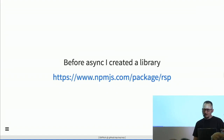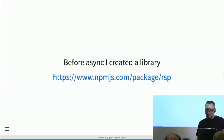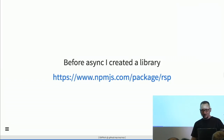Before async/await was around, I created a library on NPM. My GitHub and Stack Overflow handle is RSP from my initials. I was searching for names and the first was RSPromise — radically simplified promises. But when I required it as 'var RSP = require(RSPromise)' I saw that was my handle, so I used it as the library name. What the library does is take a promise and return another promise — a magical one.